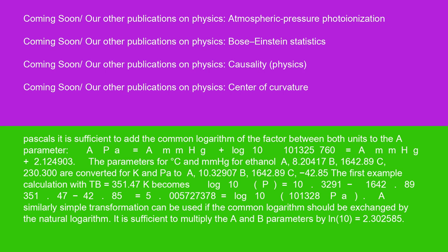The parameters for degrees C and mmHg for ethanol A, 8.20417, B, 1642.89, C, 230.300 are converted for K and PA to A, 10.32907, B, 1642.89, C minus 42.85.